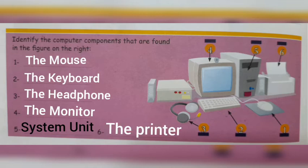Number six — it is the printer. What is the use of the printer? We can print a paper from the computer. We can print a text or picture from the computer. That is one of the main uses of the computer.